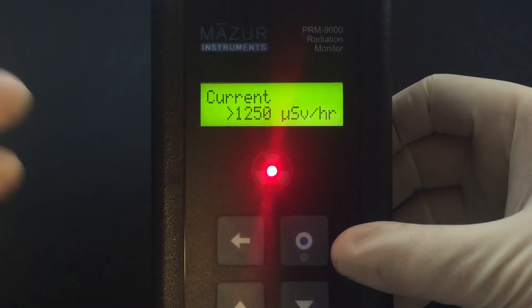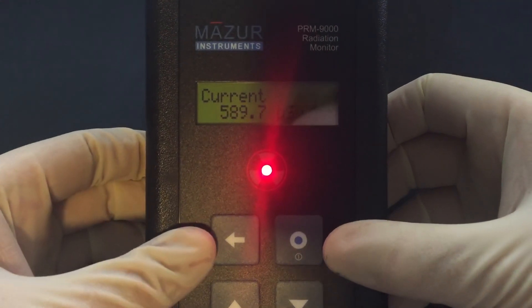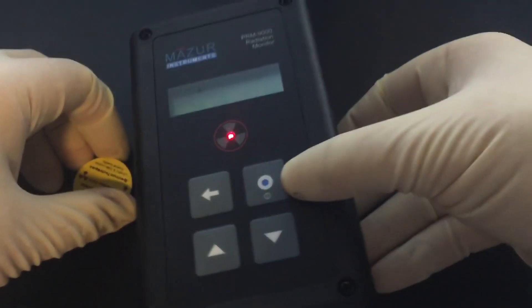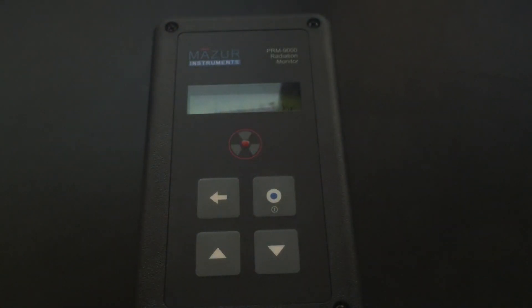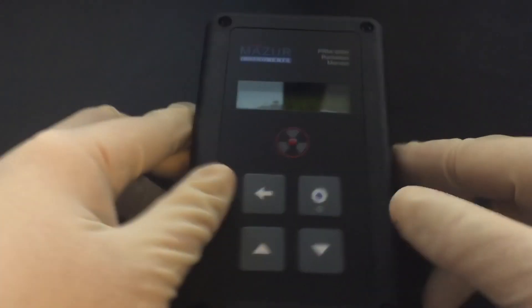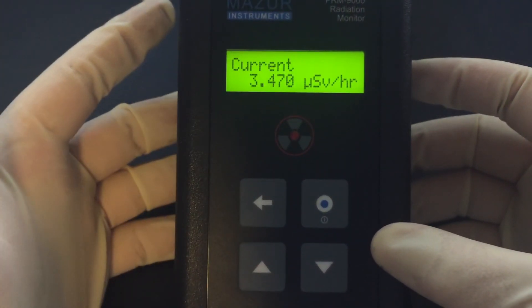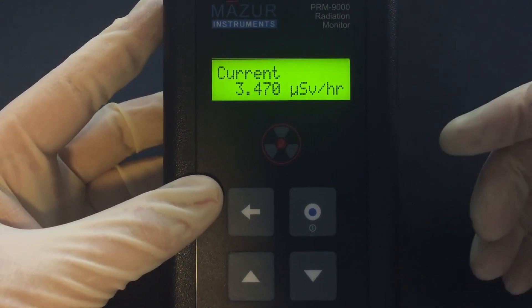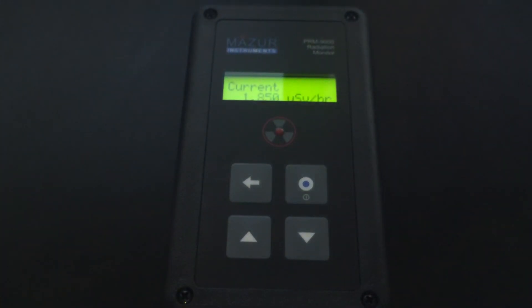So this meter is capable of reading very high rates. I am going to take this cesium-137 sample and put it back in its lead pig to limit exposure because, you know, ALARA—as low as reasonably achievable. I do these videos for educational purposes, and